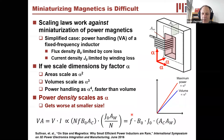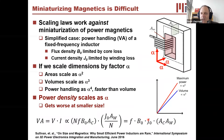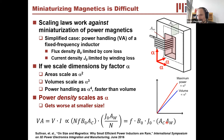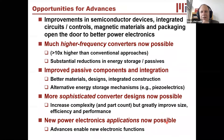Putting those together, the volt-ampere capability under simplified assumptions is proportional to frequency, flux density, current density, and the linear dimension to the fourth power — specifically the product of core cross-sectional area and window area. Since volume goes as linear dimension cubed and power handling goes as linear dimension to the fourth, as you scale down you not only lose power handling capability but also lose power density — power density scales with linear dimension. I like to think of this as the anti-Moore's law of power electronics: make it smaller and everything gets worse. That's a fundamental challenge.